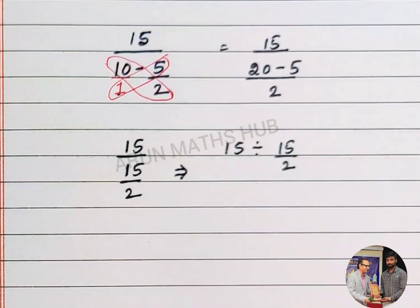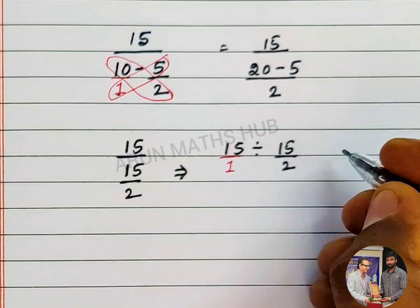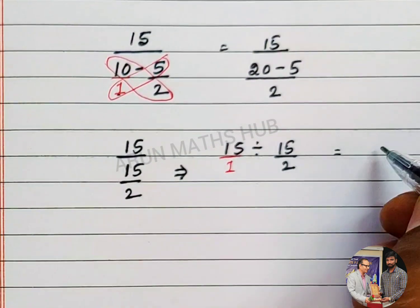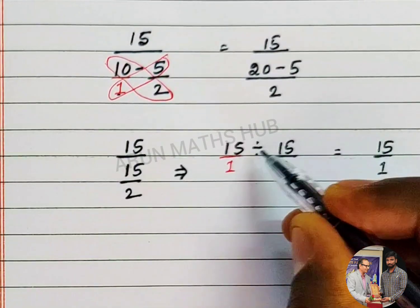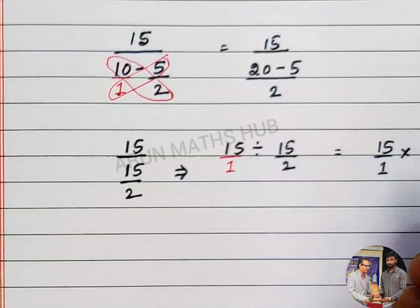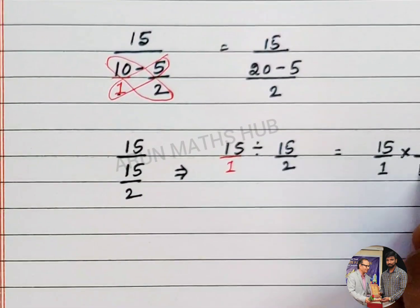Now, I will write it as what? 15 by 1. Now, 15 by 1 divided by, the divided symbol will be changed into multiply in a reciprocal, 2 by 15.